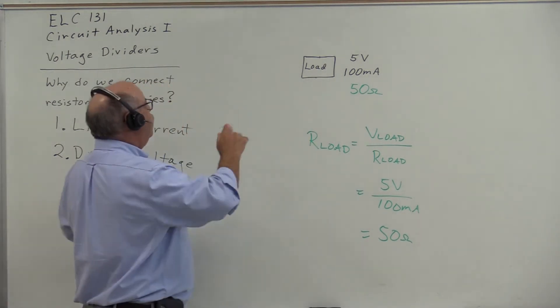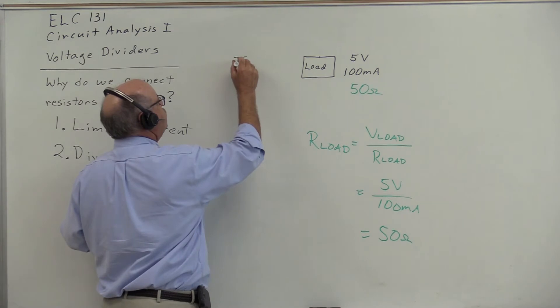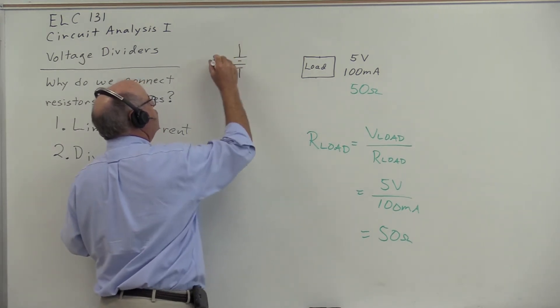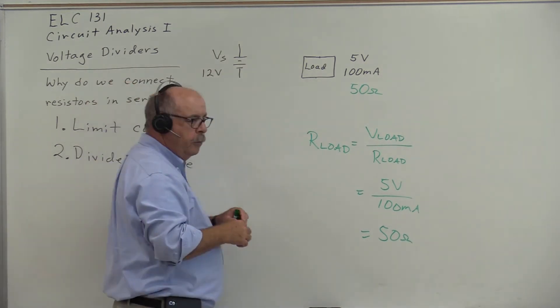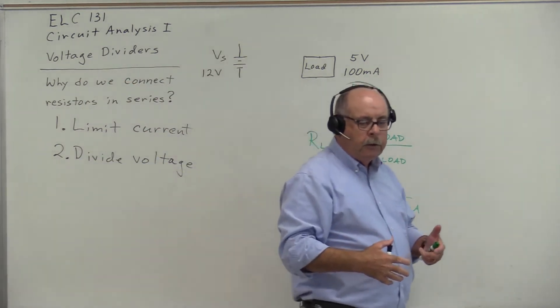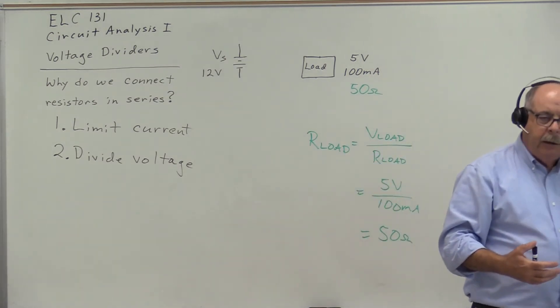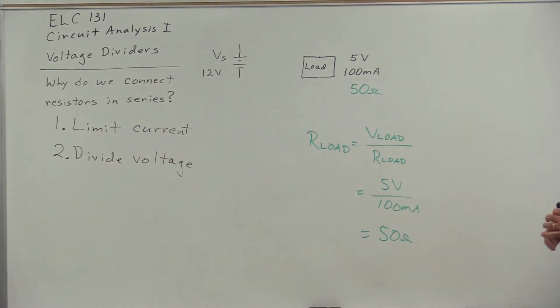What if our only available source of voltage is a 12 volt source? This 12 volts could come from a battery or a DC power supply, but our only available voltage source is 12 volts. Can I connect this 12 volt source directly to the load?